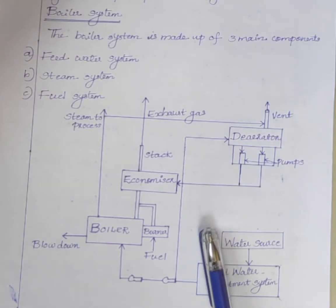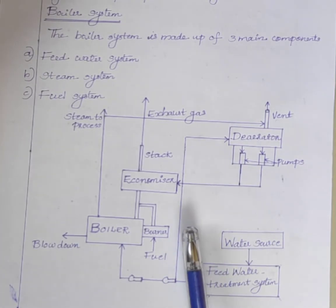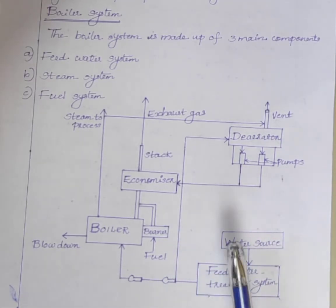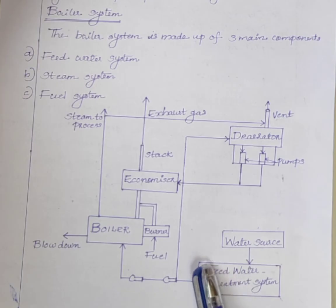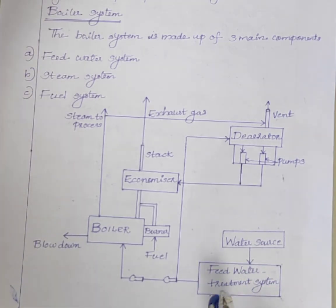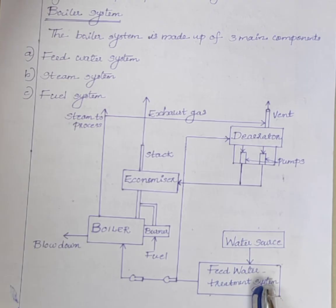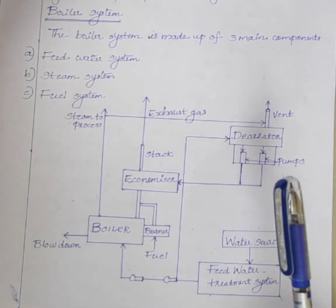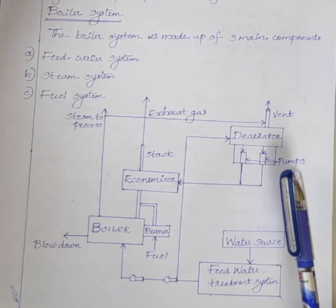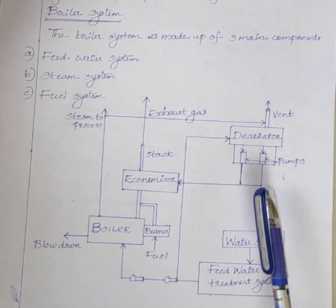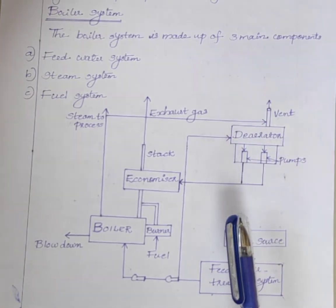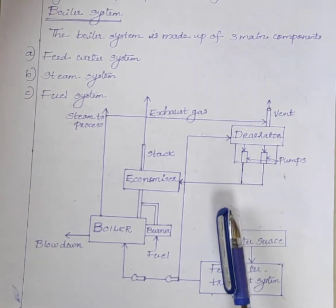There are two main sources of feed water: first one is condensate or condensed steam, and second one is make-up water or treated raw water. In boiler feed water system, a feed water treatment system is used to remove dissolved solids, suspended solids, and organic materials from the feed water. The deaerator removes dissolved gases from the boiler feed water and protects the steam from the effects of corrosive gases. The feed water treatment system ensures an efficient process and quality steam generation.